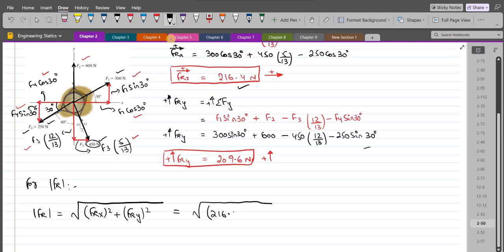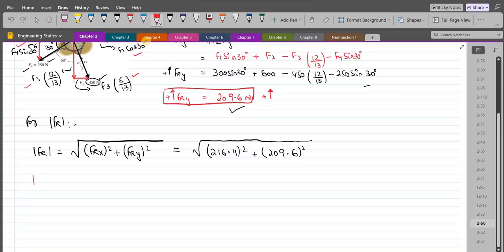This equals square root of FRx, which is 216.4 squared, plus FRy, which is 209.6 squared. So the magnitude of the resultant force comes out to be 301.3 Newtons.